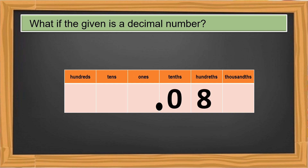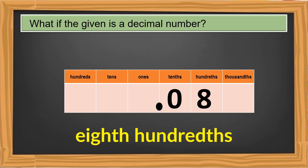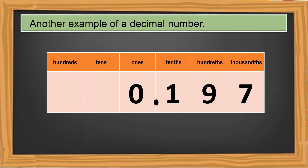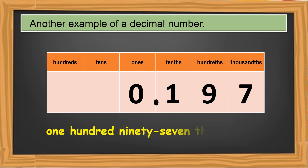We have this decimal number. This is read as eight-hundredths. Another example of a decimal number: just read the number from left to right, then add the place value of the last digit. This number is read as one-hundred-ninety-seven-thousandths.